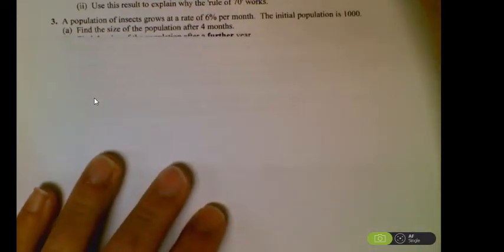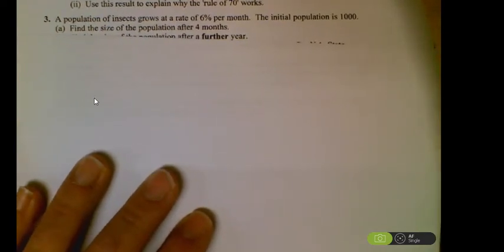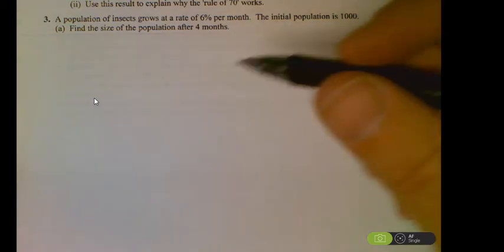All right, moving on to Worksheet B for Chapter 4. We're going to be looking at problems number 3 and 4 in this video. So we've got a population of insects growing at a rate of 6% per month. The initial population was 1,000.